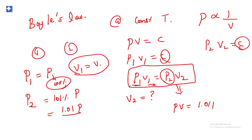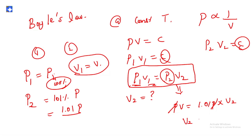Substituting into P₁V₁ = P₂V₂: P·V = 1.01P·V₂. Cancelling P from both sides gives V₂ = V/1.01, or V₂/V = 1/1.01.